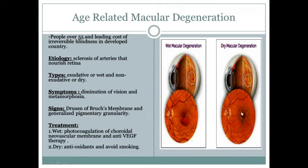The symptoms of age-related macular degeneration are diminution of vision and metamorphopsia — where straight lines appear wavy. The signs include drusen, Bruch's membrane changes, and generalized pigmentary granularity.